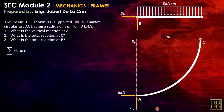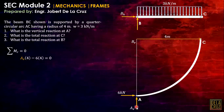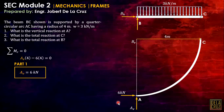Taking moment at C on member AC: AV clockwise times 4 (the radius) minus AH times 4 (also the radius) equals zero. AV equals AH, giving AV equal to 6 kilonewtons.